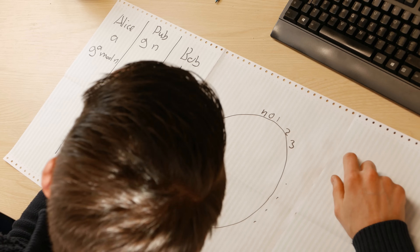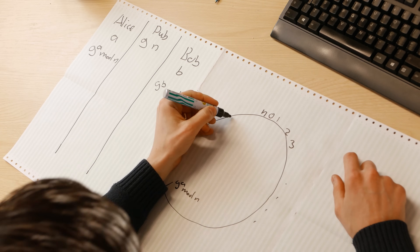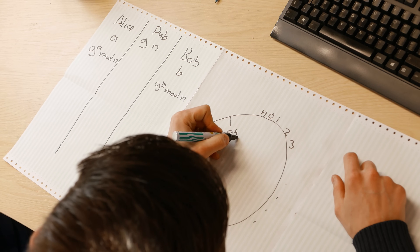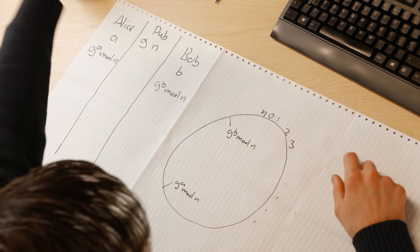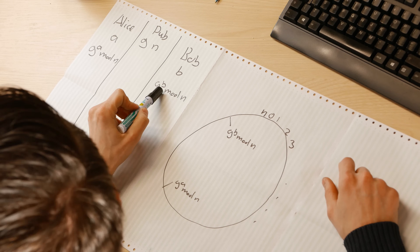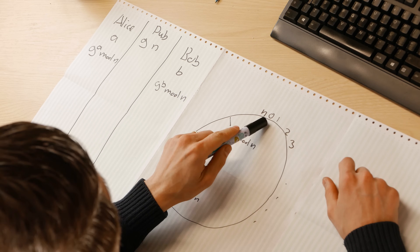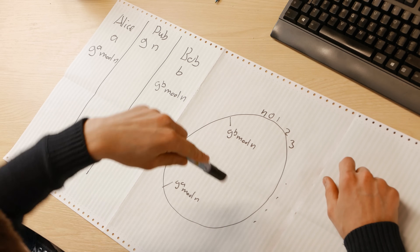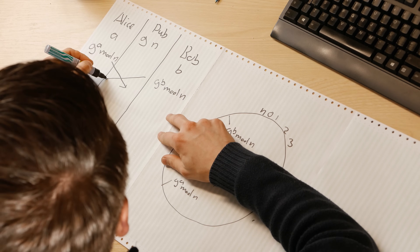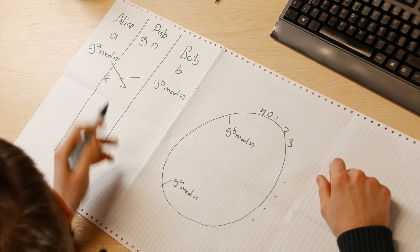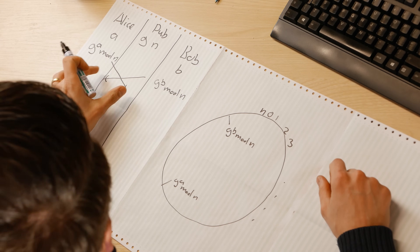Bob computes G to the B mod N, which ends up somewhere on the clock face. So we've taken G, raised it to the power of B, and done all of this modulo N — meaning if it ever goes above N, it loops back down to zero and keeps going. These are their two public components, so they share these. Calculating A and B from these public values is very, very difficult. It's called solving the discrete log problem, and practically very, very difficult even for a supercomputer.